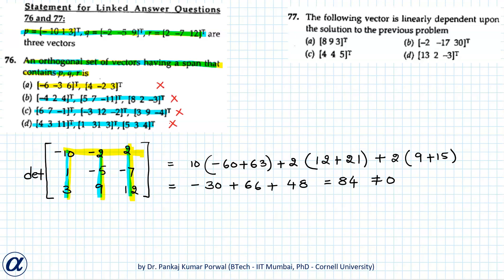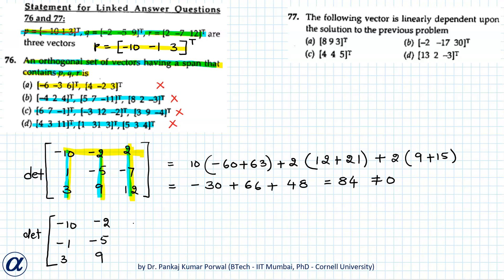The correct version of the question has a mistake in vector p. Vector p should not be as printed; rather, vector p should be (−1, 0, −1, 3). Taking this corrected p and computing the determinant of the matrix with these three vectors as columns gives the matrix: [−1, 0, −1, 3; −2, −5, 9; 2, −7, 12].